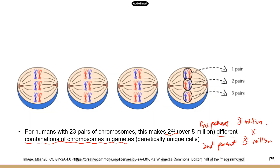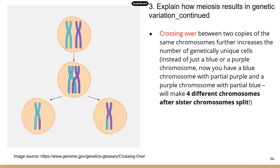That's not the end of the story, because this is just random assortment. Next we'll talk about crossing over, which further increases the number of different gametes possible. Crossing over happens in prophase I, when homologous chromosomes seek each other out and get right next to each other before they move to the middle of the cell during metaphase. In prophase I, homologous chromosomes pair up.